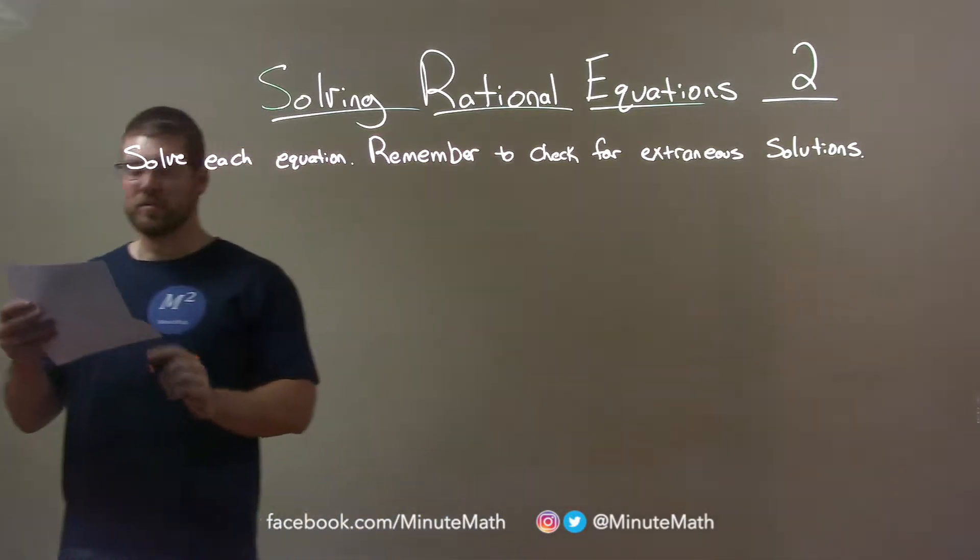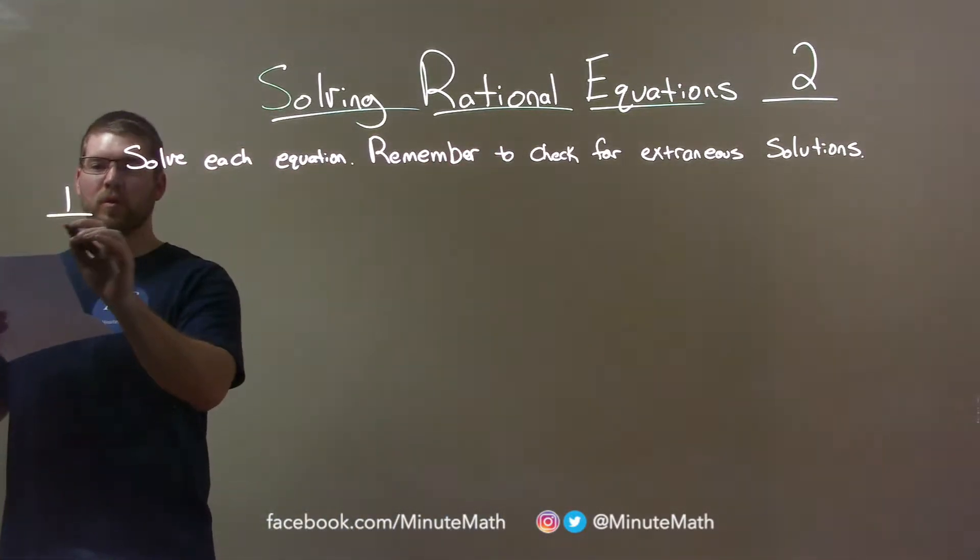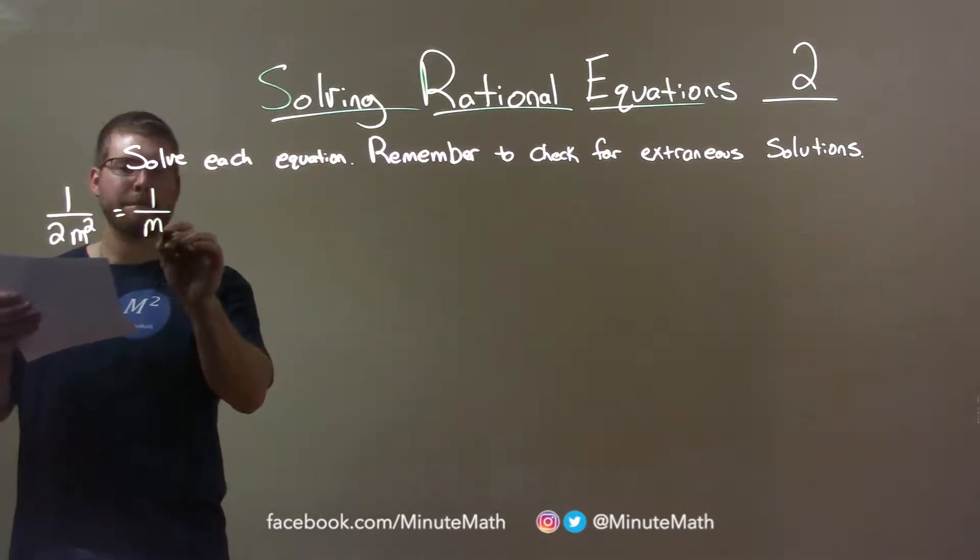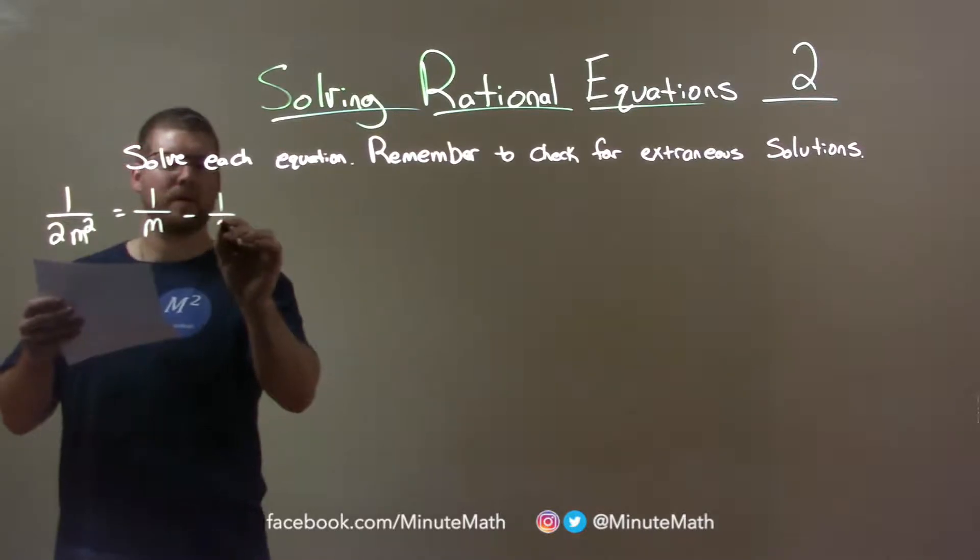If I was given this problem, 1 over 2m squared is equal to 1 over m minus 1 half.